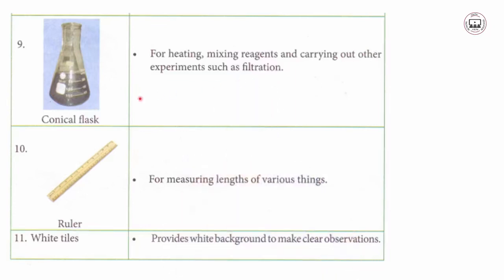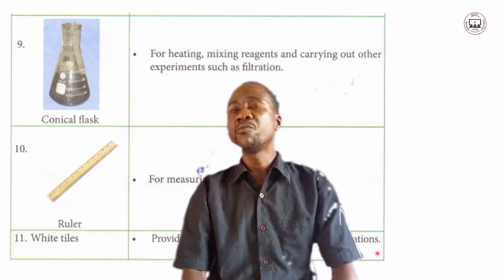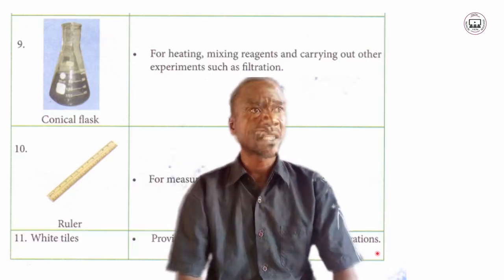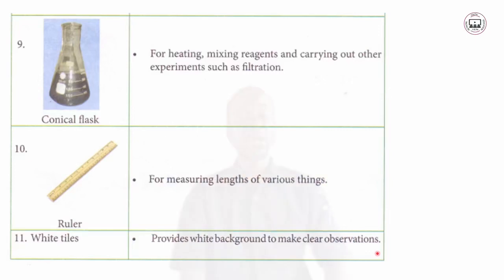Number nine, a ruler in the biological laboratory — for measuring the length of various things. Number ten, white tiles — these provide a white background to make clear observations. For example, when conducting an experiment where you observe a color change, a surface with different colors could affect your results. White tiles ensure the background of observations is very clear.